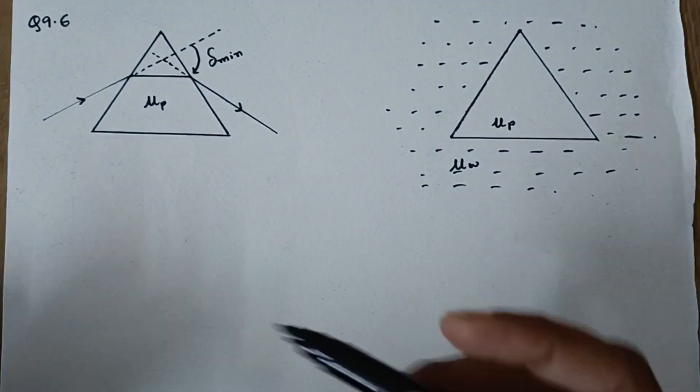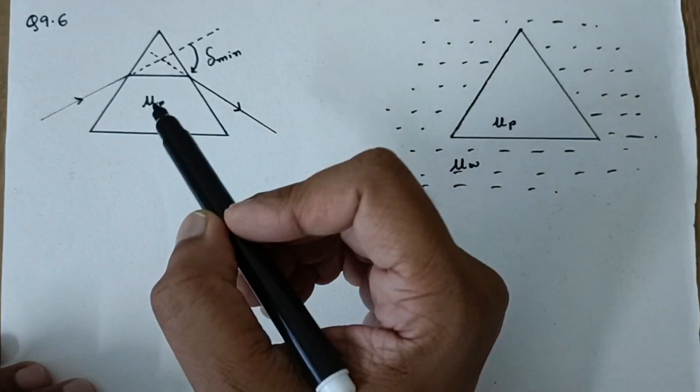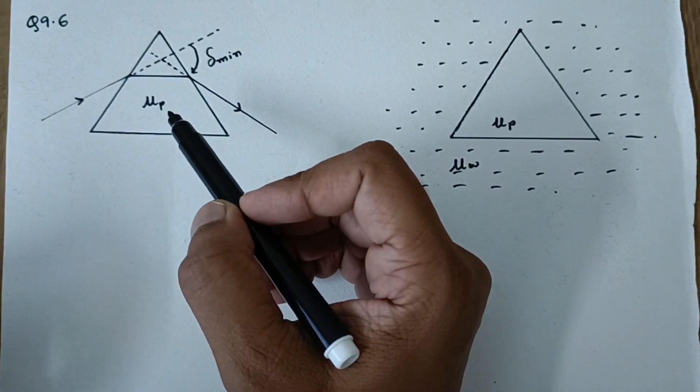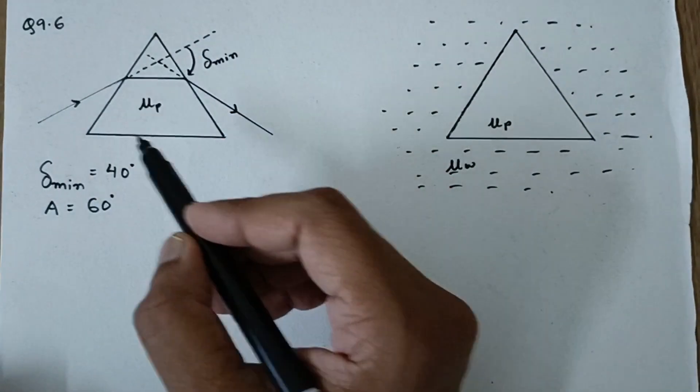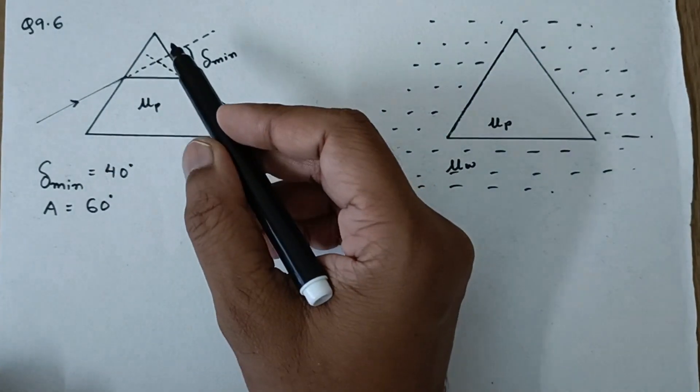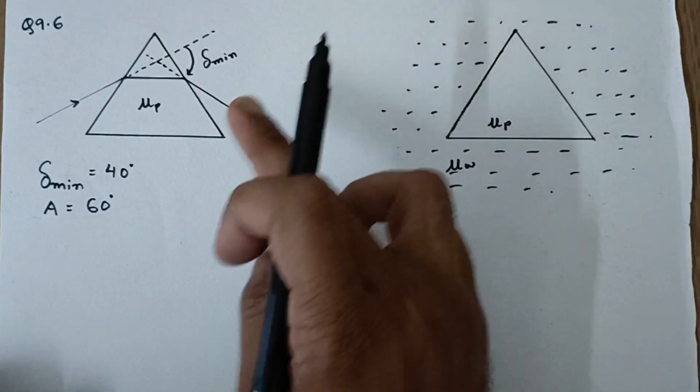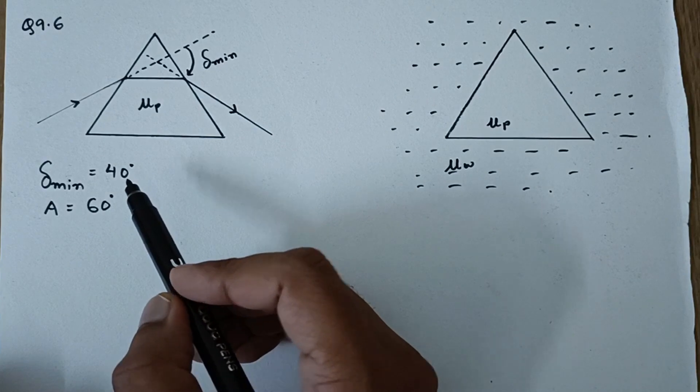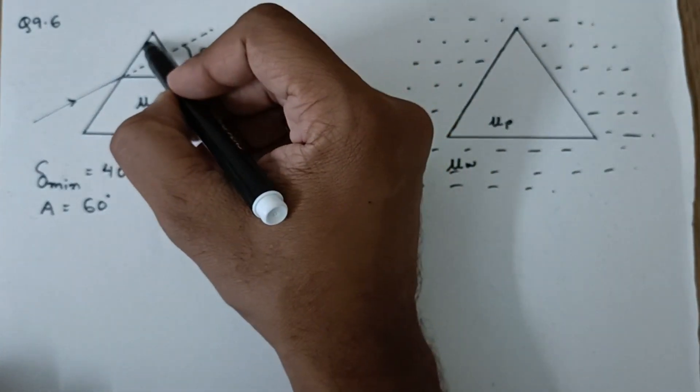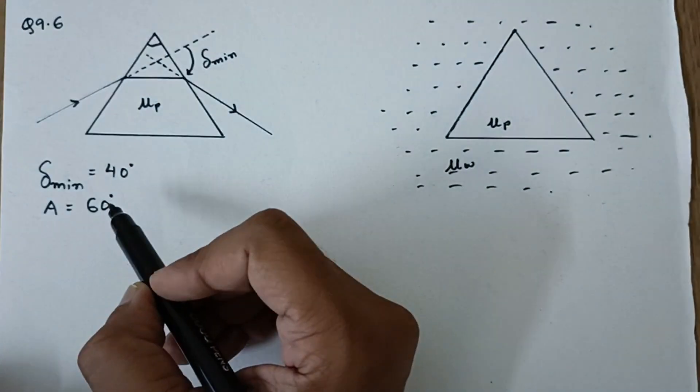So the question is, we are given a prism whose refractive index we don't know. But we do know that the minimum deviation of this particular prism when kept in air is 40 degrees. The angle of prism, that is this angle, is 60 degrees.